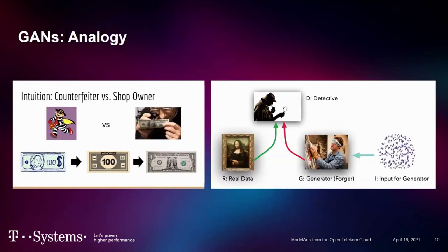The best way to understand GANs is this example: imagine two parties — the counterfeiter and the treasury. The counterfeiter wants to make the most convincing fake money possible by studying real money and learning what features a real dollar bill has. If the counterfeiter learns enough through experience, they can produce very convincing fakes. However, the treasury always has to stay ahead, focusing on finer security details to discriminate between real and fake bills. Through constant competition, the counterfeiter keeps improving at making fakes and the treasury gets better at detecting them.